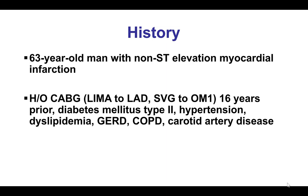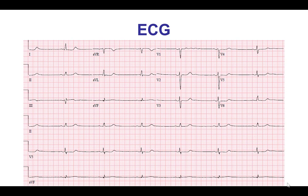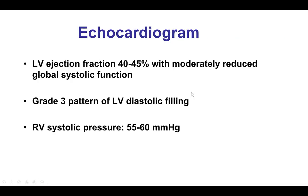The patient presented with non-ST elevation myocardial infarction. He had previous coronary bypass with LIMA to LAD and vein graft to the obtuse marginal, as well as multiple comorbidities. EKG showed mild changes with ST-segment depressions, and the echocardiogram showed an ejection fraction of 40-45% with moderate pulmonary hypertension.